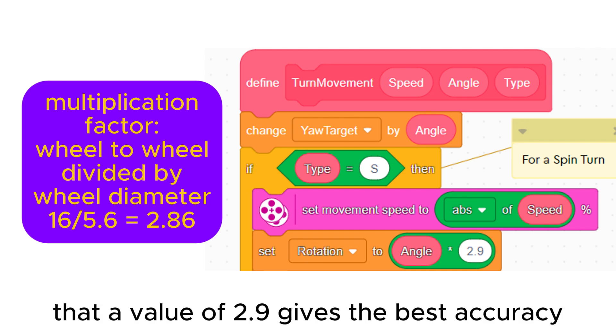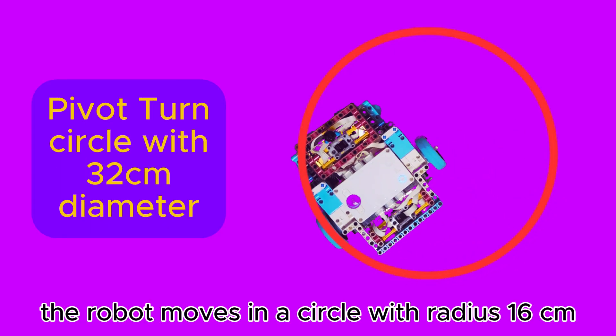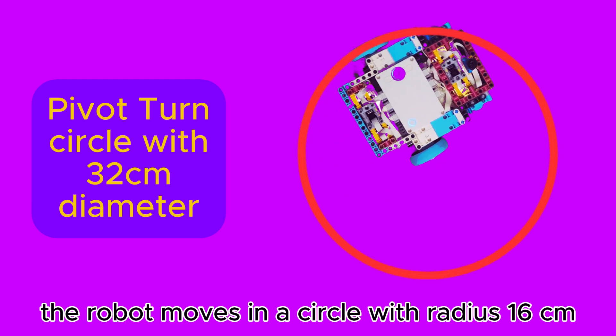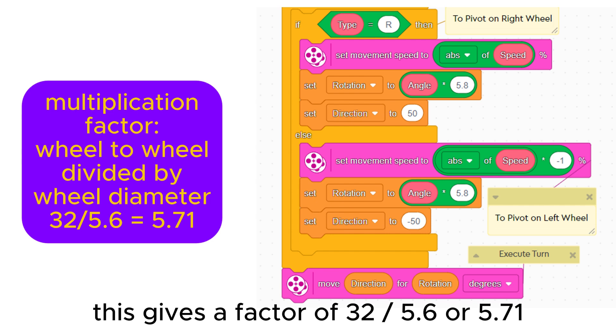I found in practice that a value of 2.9 gives the best accuracy. For a pivot turn, the robot moves in a circle with radius 16cm or diameter 32cm. This gives a factor of 32 divided by 5.6 or 5.71. I found that 5.8 gives the best result.